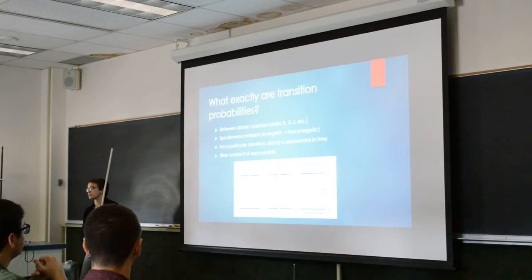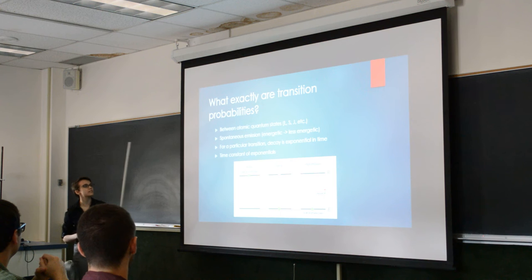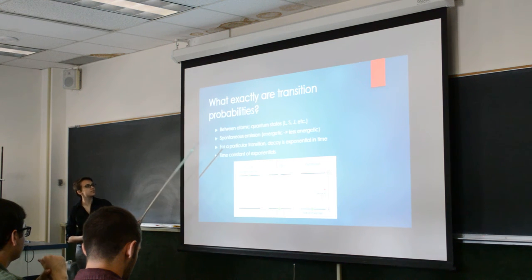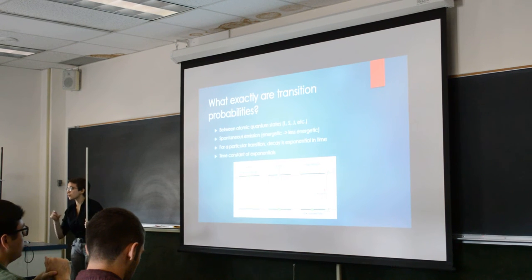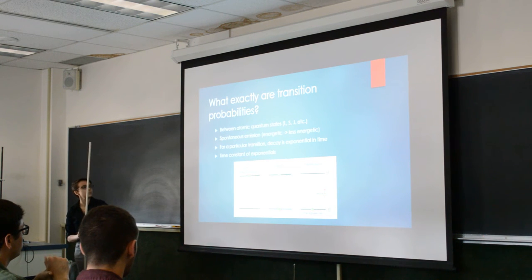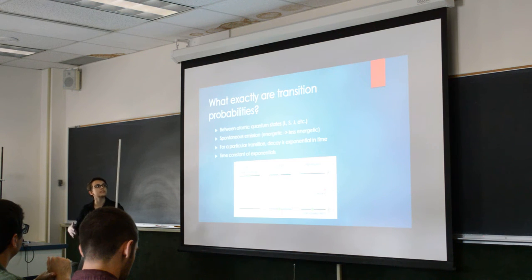So what exactly are transition probabilities? Atomic transitions are between different quantum states, which are states that have different quantum numbers — L, S, and J. There are many different kinds of transitions, but the kind we focused on was spontaneous emission, which is when an element in an energetic state spontaneously changes into a less energetic state and emits a photon at a very specific wavelength relating to that particular transition. For a particular transition, the decay is exponential, similar to radioactive decay.